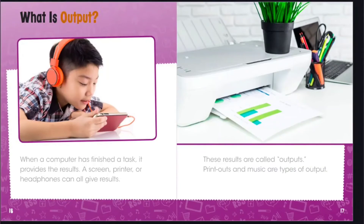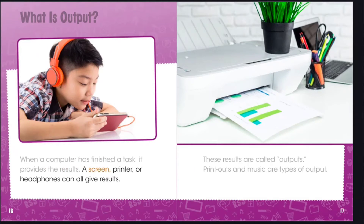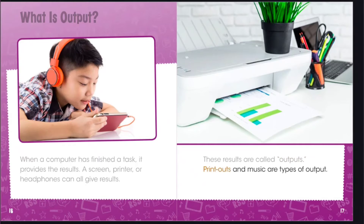What is output? When a computer has finished a task, it provides the results. A screen, printer, or headphones can all give results. These results are called outputs. Printouts and music are types of output.